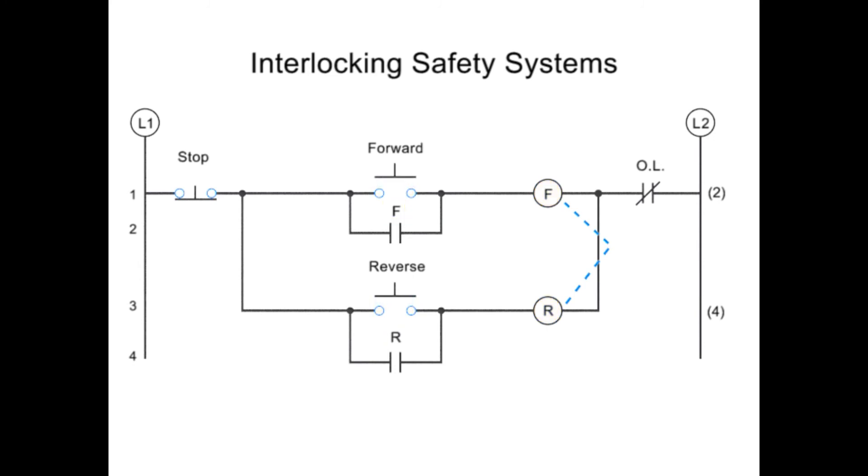The second level of protection is an electrical interlock. An electrical interlock works by using normally closed auxiliary contacts within the opposite circuitry, so that when the forward button is pushed, there is a check to make sure no current is running through the reverse circuitry. The same is true when the reverse button is pushed.